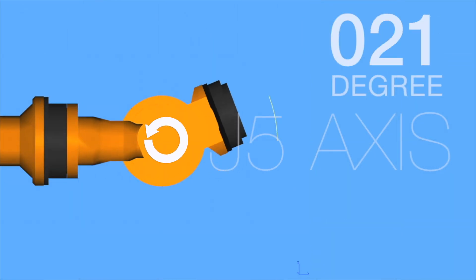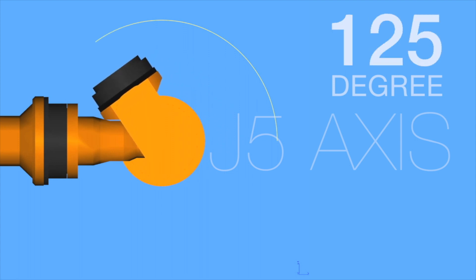Axis 5: This axis allows the wrist of the robot arm to tilt up and down. This axis is responsible for the pitch and yaw motion.